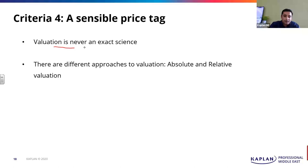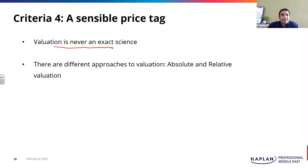Nobody knows what the intrinsic value is, and your job is also not to calculate the intrinsic value. Benjamin Graham said a wonderful thing: you don't need a weighing machine to say whether a person is overweight or underweight. And that is your job — your job is to say whether a person is overweight or underweight, not to say what the exact weight is. If a person's weight is really too close to call, don't make an opinion.